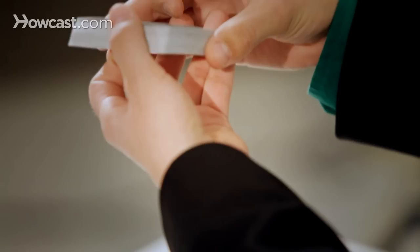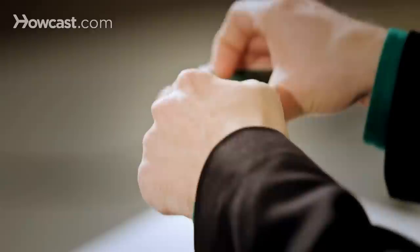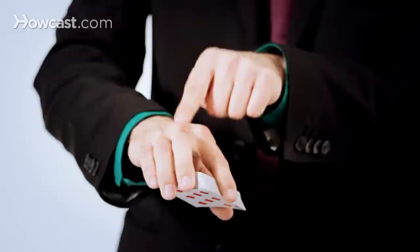This is how to do a ribbon spread and turn over. You hold the deck of cards in your hand and you have it slightly beveled. That means you place it like this and you get an angle going towards your hand.